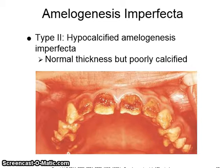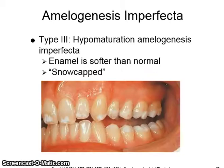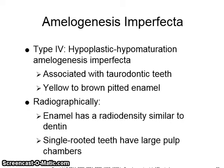Type 2 is hypocalcified amelogenesis imperfecta, which shows enamel of normal thickness but it is poorly calcified. Type 3, hypomaturation amelogenesis imperfecta, shows enamel that is softer than normal or snow-capped. Type 4, hypoplastic-hypomaturation, is associated with taurodontia and shows yellow to brown pitted enamel. Radiographically, the enamel has a radio density similar to dentin.